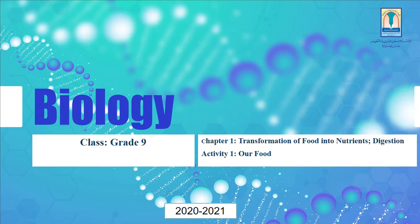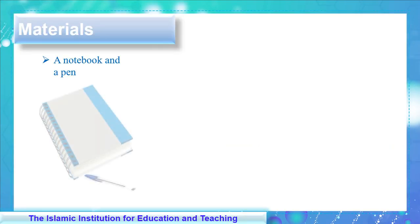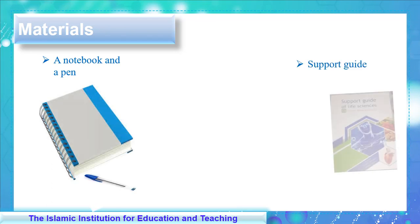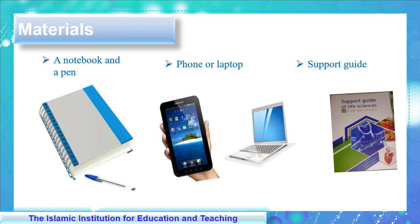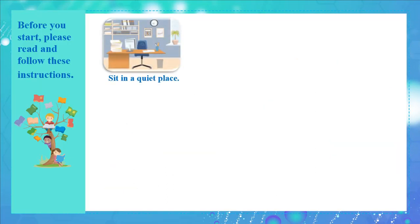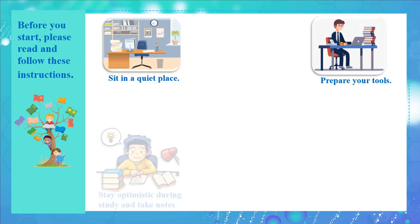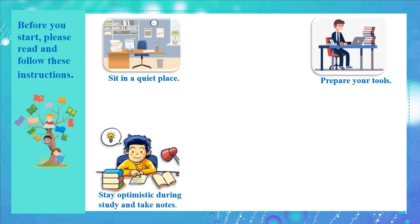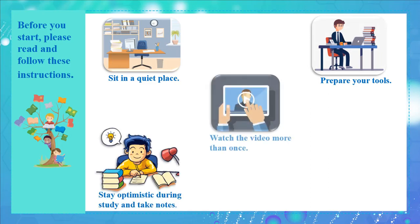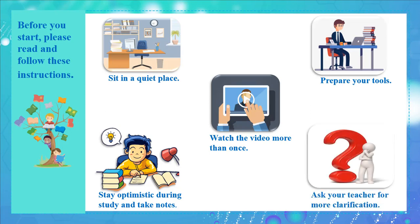Peace be upon you, ninth graders. Today we will be learning how to identify some constituents in our food. Before we start, prepare the following materials: a notebook and a pen, your support guide, and a phone or laptop. Make sure that you sit in a quiet place, prepare your tools, stay optimistic during study, and take notes. Watch the video more than once and ask your teacher for more clarification.